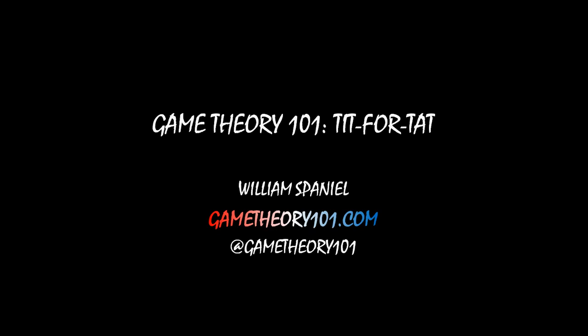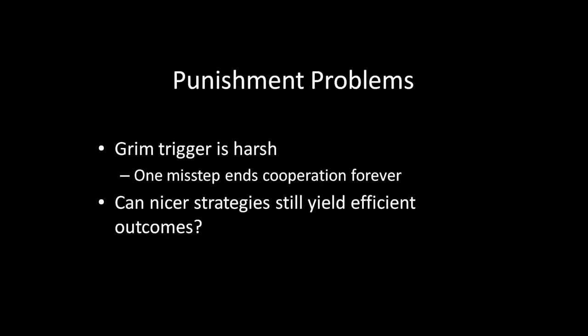Last time we talked about the Grim Trigger strategy in an infinitely repeated prisoner's dilemma, but there might be something concerning about a Grim Trigger strategy. It is extremely harsh. A single misstep from the opponent will end cooperation forever. If you defect just a single time over the course of a game, then from that period forward I will never cooperate with you again. And if you're concerned that Grim Trigger is overly harsh in that regard, you might then wonder whether nicer strategies, strategies that do not terminate cooperation forever at a single misstep, whether those types of strategies can still yield efficient outcomes.